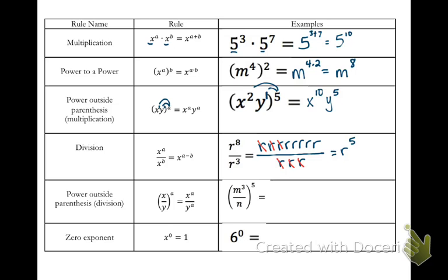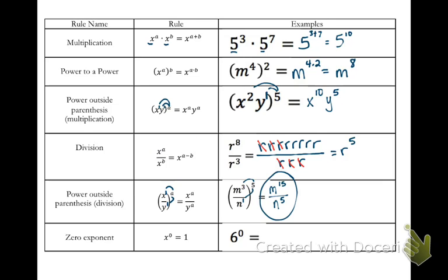Pause your video and copy down the next line: power outside of parentheses with division. Same idea — distribute the outside exponent a to each exponent on the inside. In the rule statement x to 1 and y to 1, distributing a gives x to the a over y to the a. In our example, n gets an implicit exponent of 1, and we take 5 times each exponent to get m to the 15th over n to the 5th. We can't simplify further because m and n are different bases.